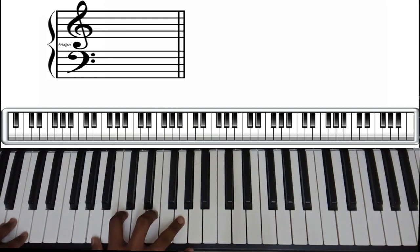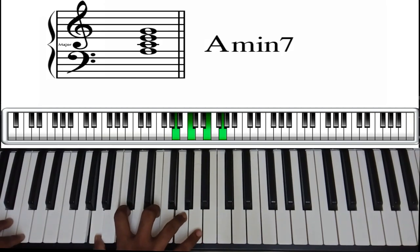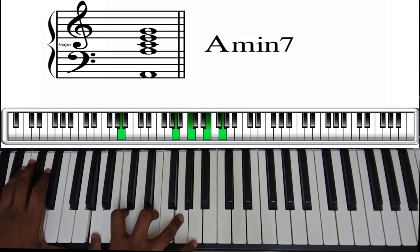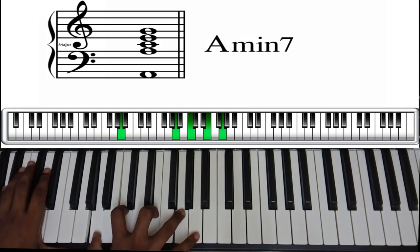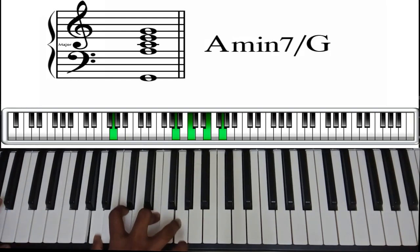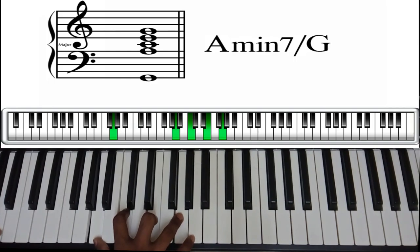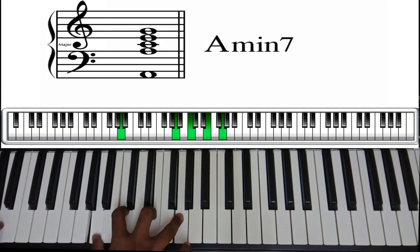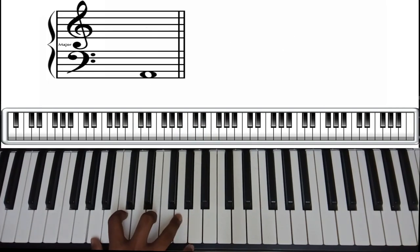First, you have the main chord — that is your right hand. You have the root note: C, then B in the bass. Let's look at this example: if you take A minor 7, you have the A minor chord, and you can use G as the bass note. We use A minor 7 slash G — you know that?